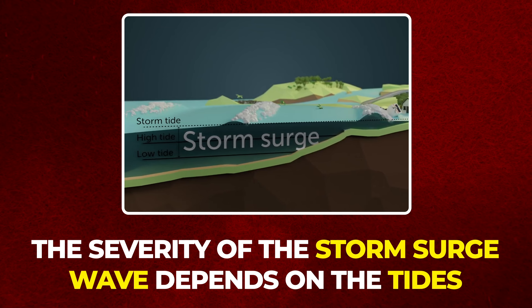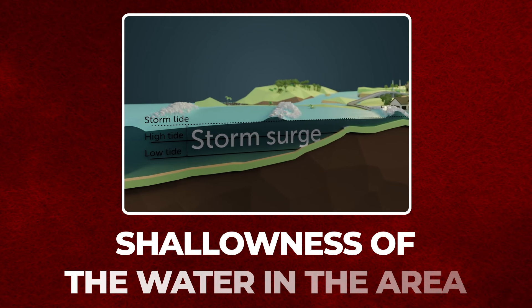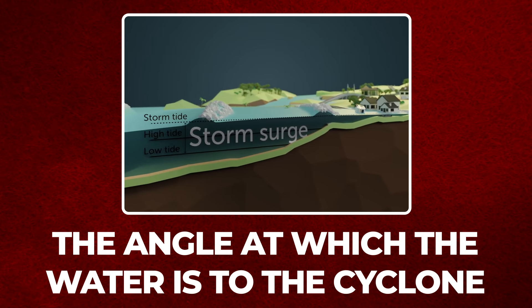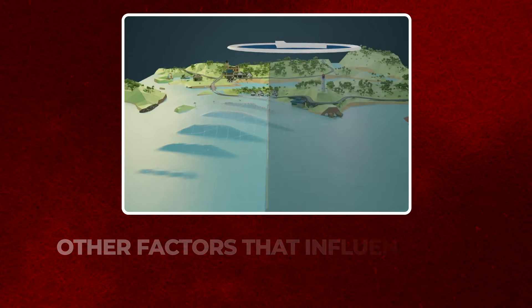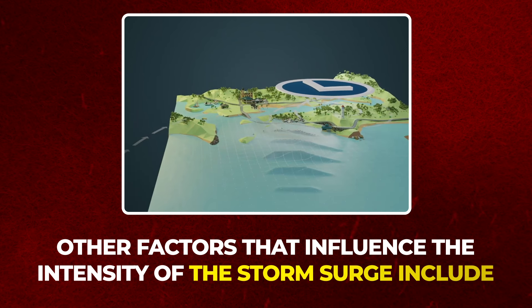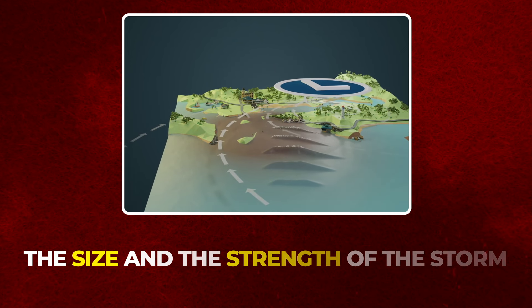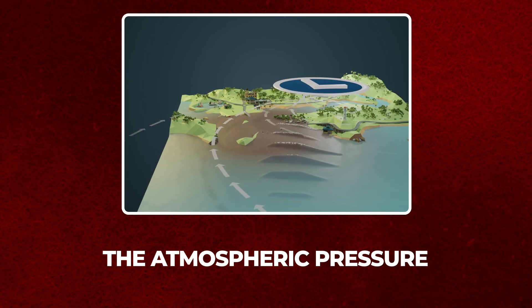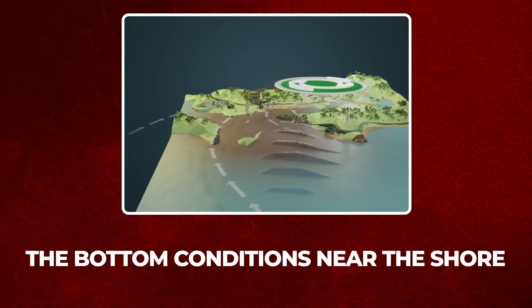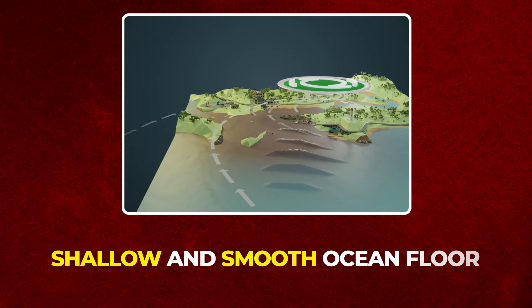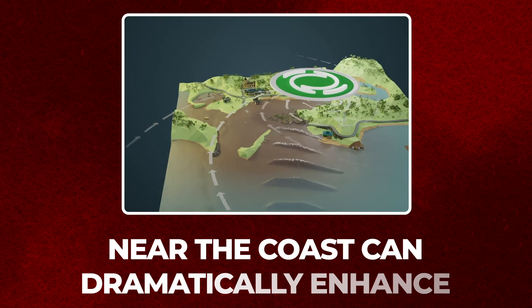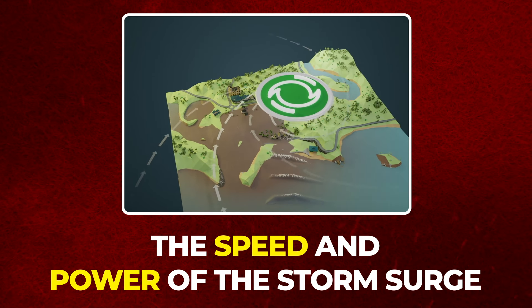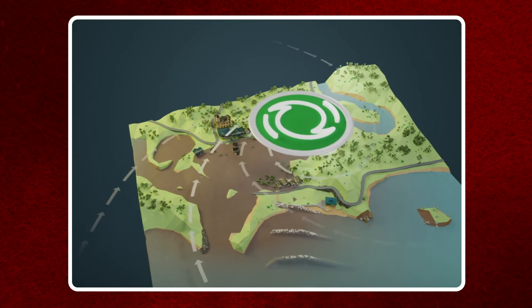The severity of storm surge waves depends on the tides, the shallowness of water in the area, and the angle at which the wind hits the cyclone. Other factors that influence the intensity of the storm surge include the size and strength of the storm, the atmospheric pressure, and the bottom conditions near the shore. A shallow and smooth ocean floor near the coast can dramatically enhance the speed and power of the storm surge.